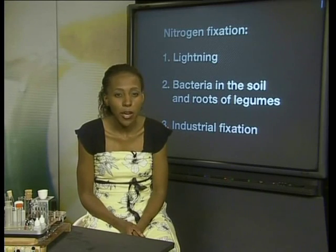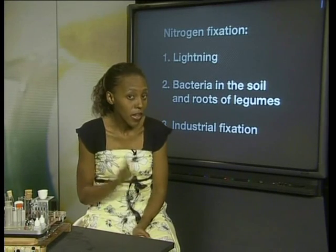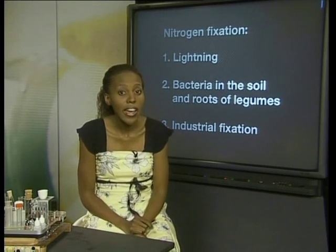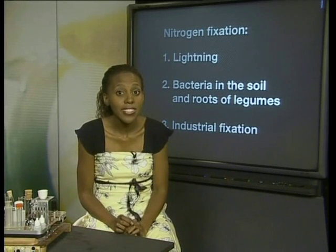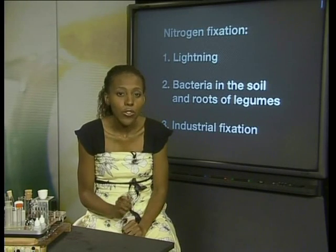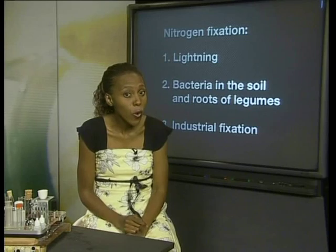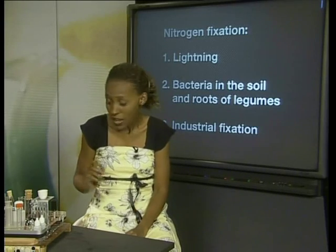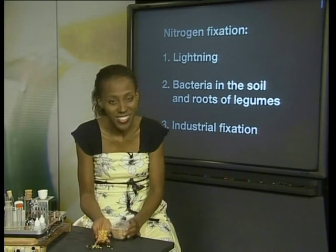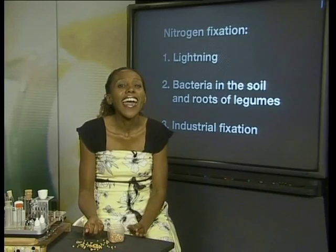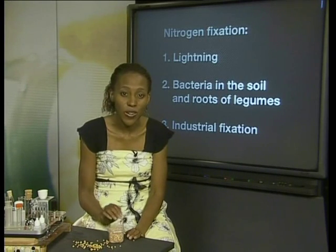Nitrogen fixation can happen in three ways in the biosphere. Firstly, through lightning in the atmosphere. Secondly, through bacteria living in the soil or roots of plants called legumes, like bean plants. And lastly, through industrial fixation.